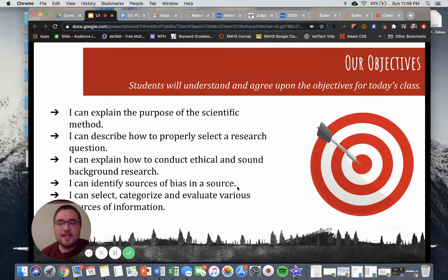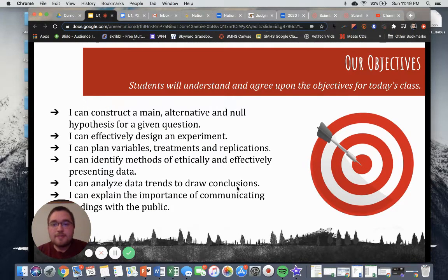By the end of it, you'll be able to explain the purpose of the scientific method, describe how to properly select a research question, explain how to conduct ethical and sound background research, identify bias, select, categorize, and evaluate sources of information, construct a main alternative and null hypothesis, effectively design an experiment, plan for variables, treatments, and applications in an experiment, identify methods of ethically and effectively presenting data, analyze data trends to draw conclusions, and explain the importance of communicating findings with public audiences.